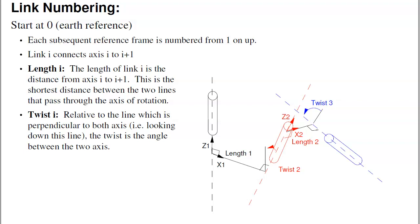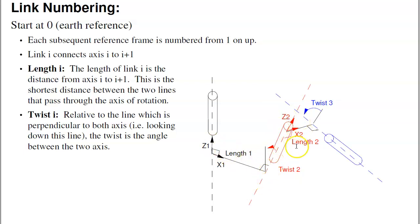The convention for defining the reference frames is this. You start at reference frame 0 — that's your Earth reference — then go from joint to joint along the robot, adding one for each: reference frame 1, reference frame 2, and so on. The reference frames are defined so that the z-axis is where you rotate, the x-axis is the closest point between one z-axis and the next frame's z-axis, and x points to the next z-axis. You go from reference frame 0 to 1 to 2 to 3, moving only along the x and z directions.